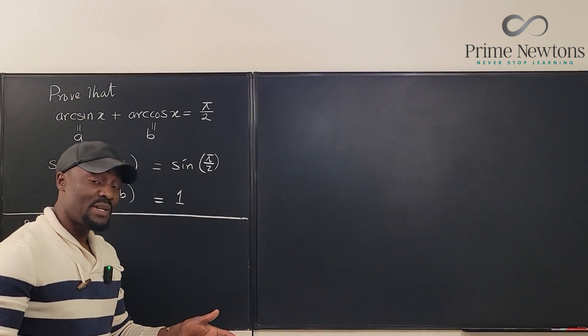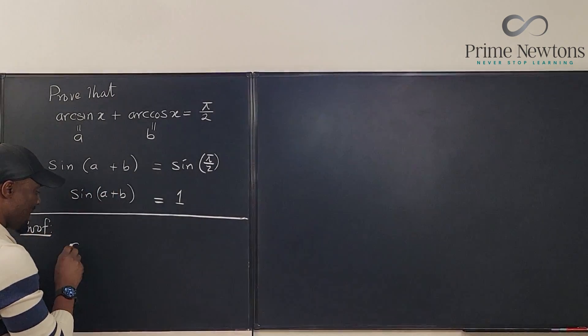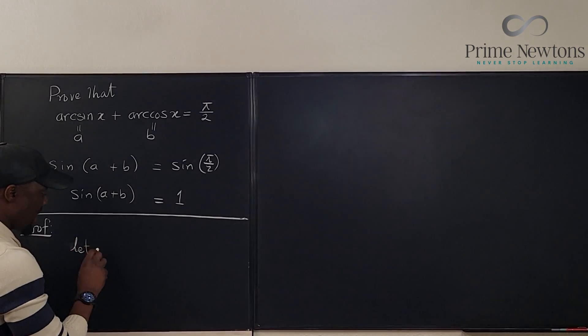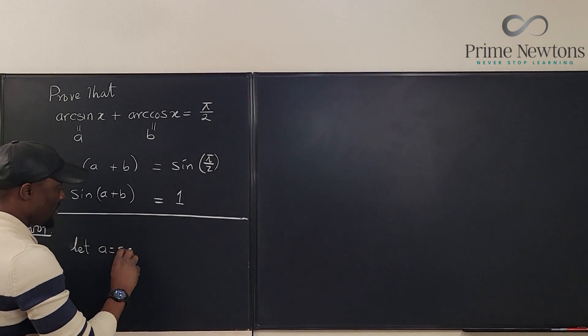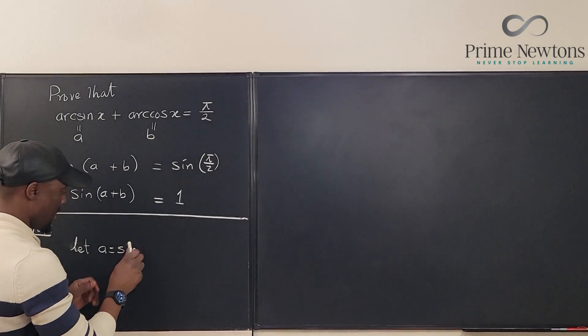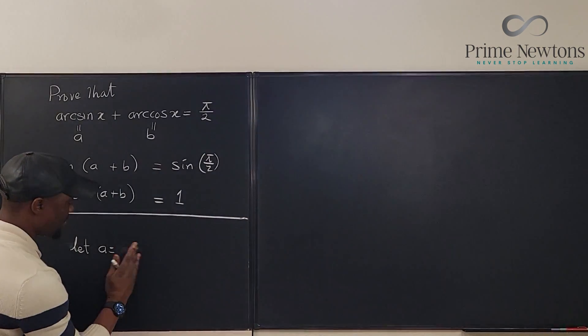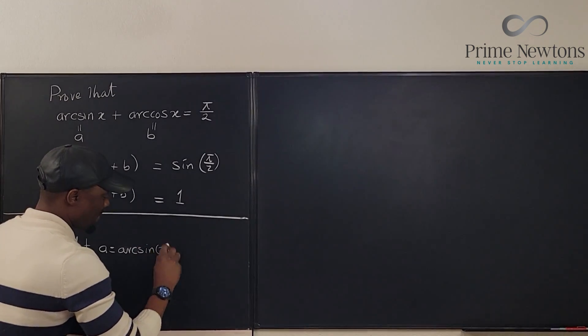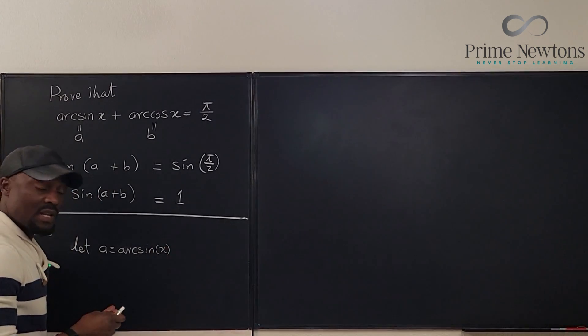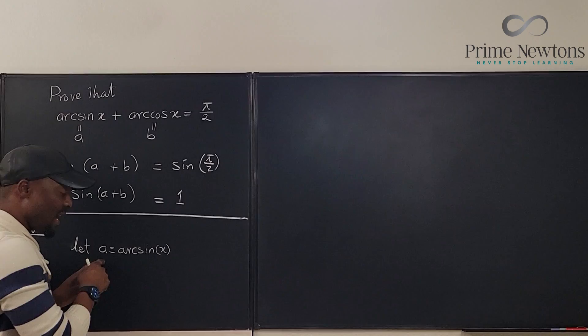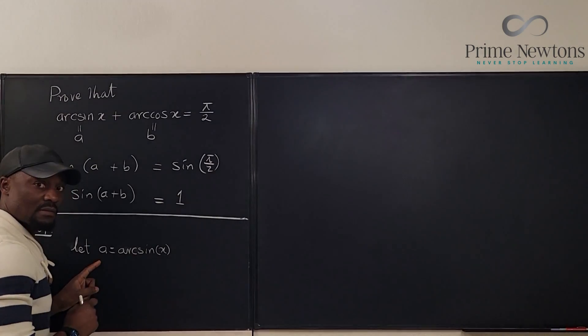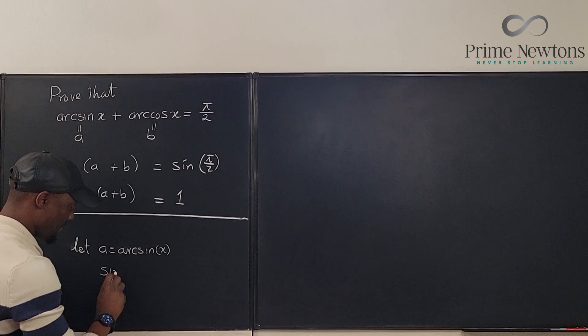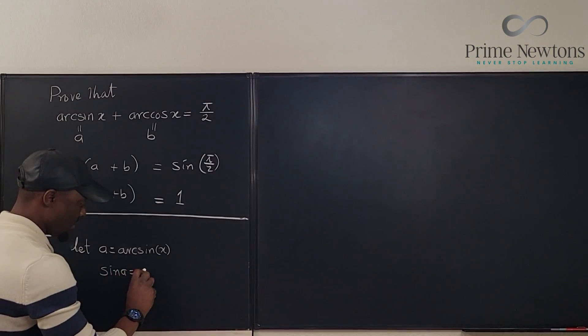Let's just prove it. I'm going to build on the assumption I just made. Let a be equal to arc sine of x. And what does this mean? It means if you take the sine of a, you're going to get x. That's the meaning. So sine a is equal to x.